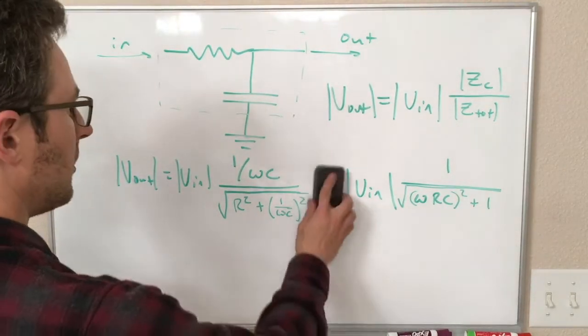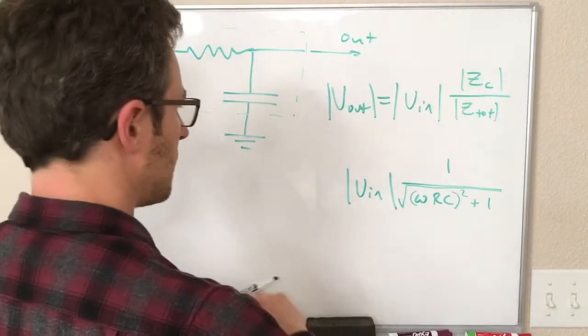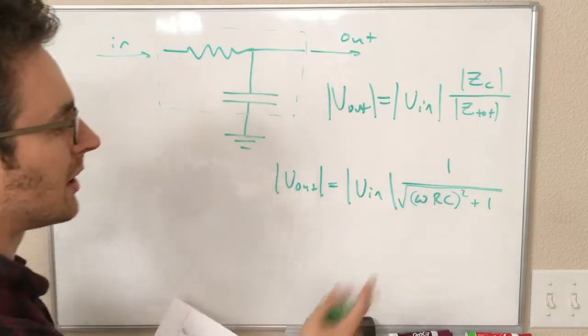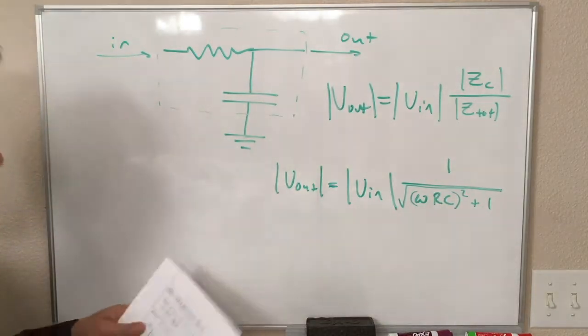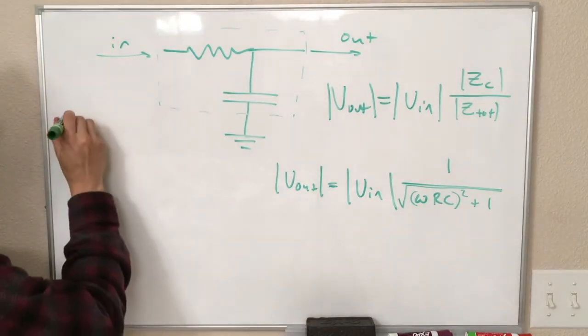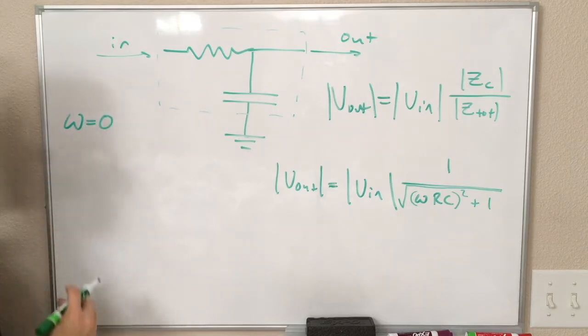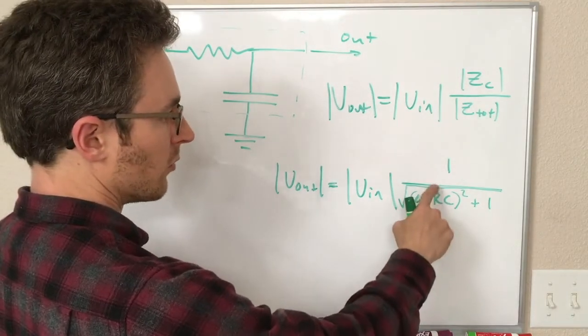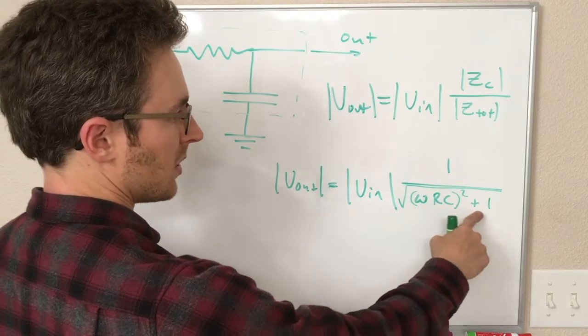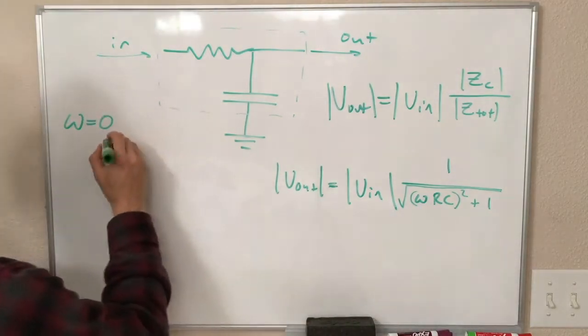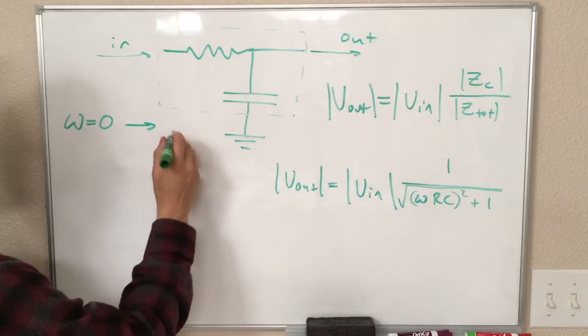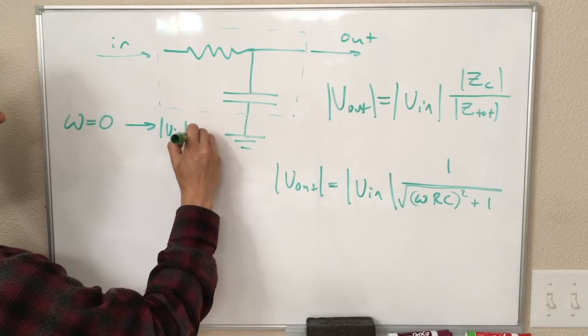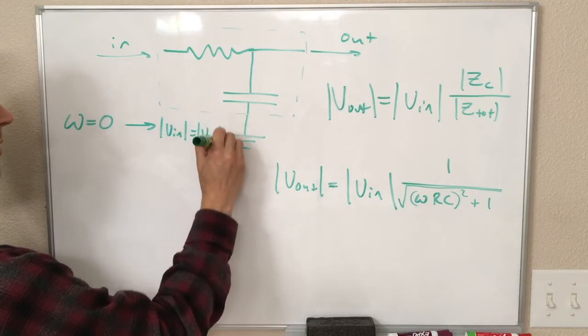This is our output voltage. Let's look at some limiting cases in terms of values of omega. If omega is equal to 0, plugging in omega equals 0 here, we have 1 over the square root of 0 plus 1. It says 1. Omega equals 0 means that our gain is 1, or in other words, Vin is equal to Vout.